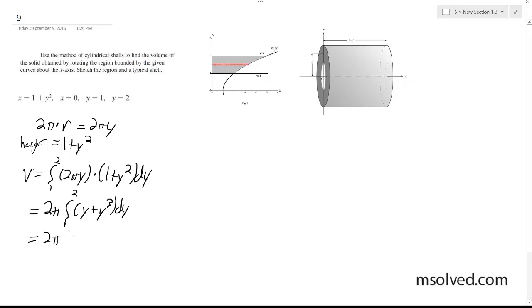Further, we get 2 pi, y squared over 2 plus y to the 4th over 4, from 1 to 2.